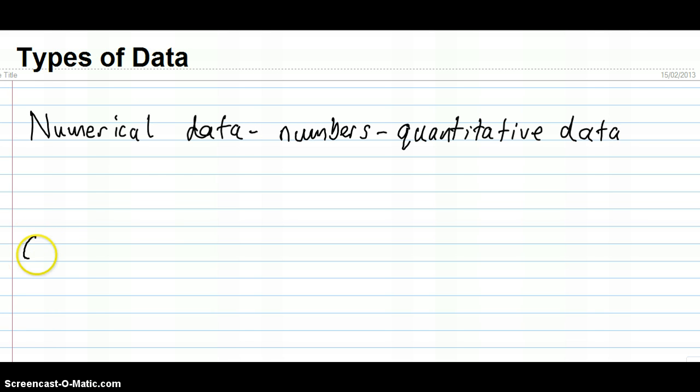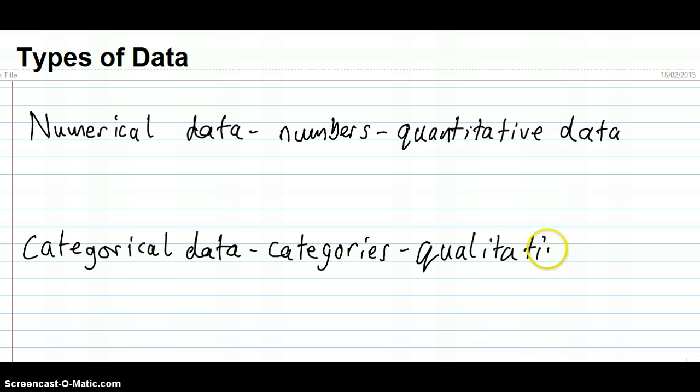And the other type is categorical data, which again as the name suggests has to do with categories, different types, names. And it can also be called qualitative data because it's not dealing with numbers, it's dealing with the qualities, the characteristics or categories of things. So, those are our two main categories of data.